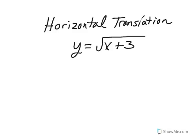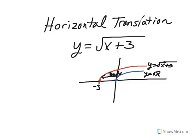The following is an example of a horizontal translation: y equals the square root of x plus 3. This has the effect of shifting y equals the square root of x to the left 3 units. The graph in blue is y equals square root of x. The graph in red is y equals square root of x plus 3. Please pause the video and copy this into your notes.